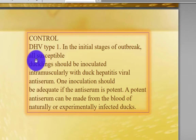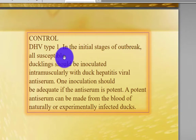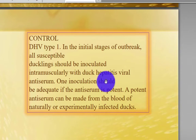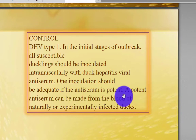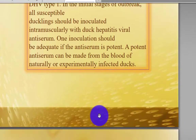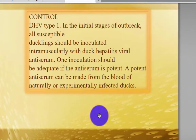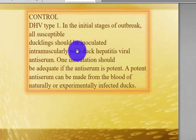Control: for Duck Hepatitis Virus Type 1, in the initial stage of an outbreak, susceptible ducklings should be inoculated intramuscularly with duck hepatitis antiserum. A single inoculation should be adequate if the antiserum is potent. A potent antiserum can be made from the blood of naturally or experimentally infected ducks. Use antiserum immediately when symptoms appear.